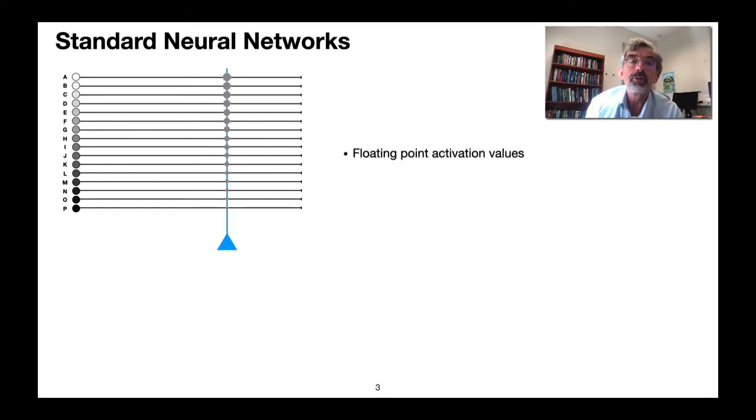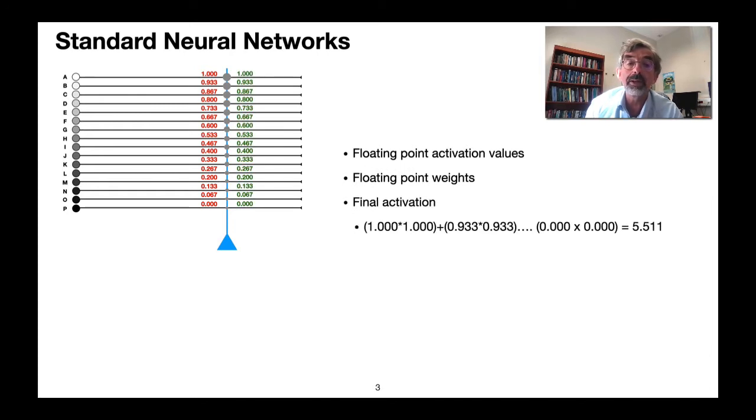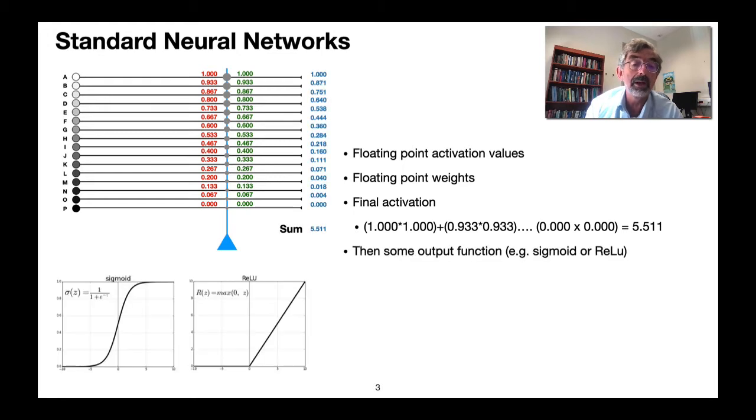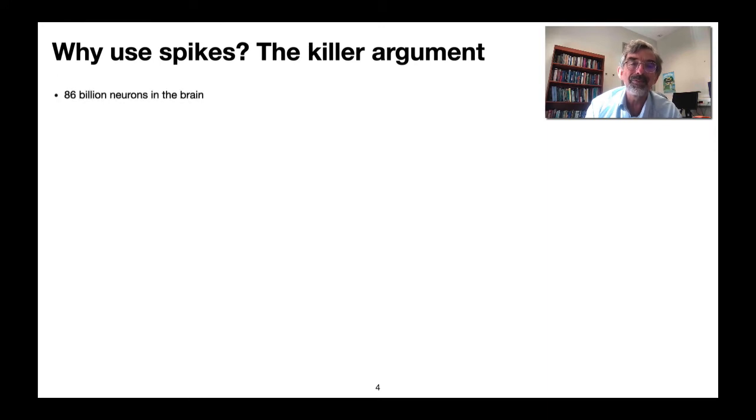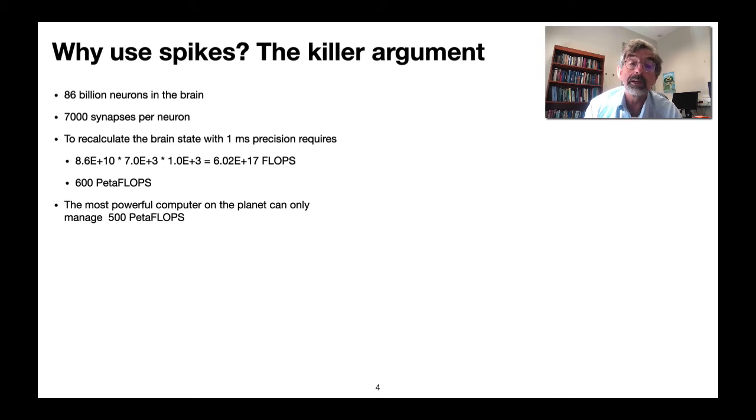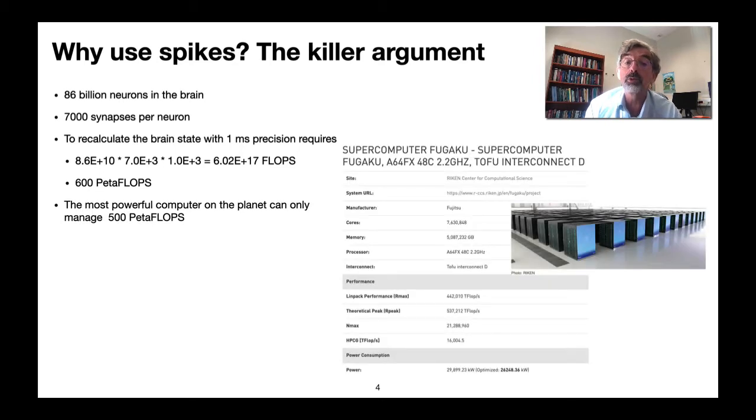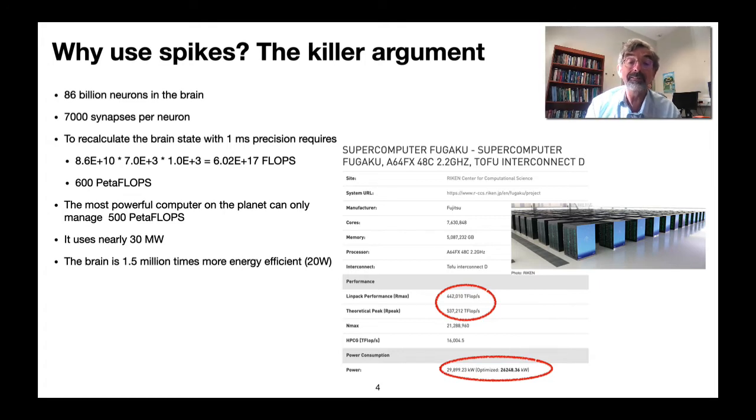So let's just recap on a standard neural network approach where here we got 16 neurons and they're all sending floating-point numbers and then this output neuron has a set of weights which are also floating-point numbers. We calculate the final activation by multiplying the weights and the activation levels and adding them all together and then putting that through some output function. Now if that was the way that the brain works there's a big problem because if you say well we've got 86 billion neurons in the brain and there are 7,000 synapses per neuron, to calculate the brain state with one millisecond precision a thousand times a second would require 600 petaflops and the most powerful supercomputer on the planet, Fugaku in Japan, can only manage about 500 petaflops and it's using nearly 30 megawatts of power whereas the brain only uses 20 watts, 1.5 million times more energy efficient. Where does that advantage come from?